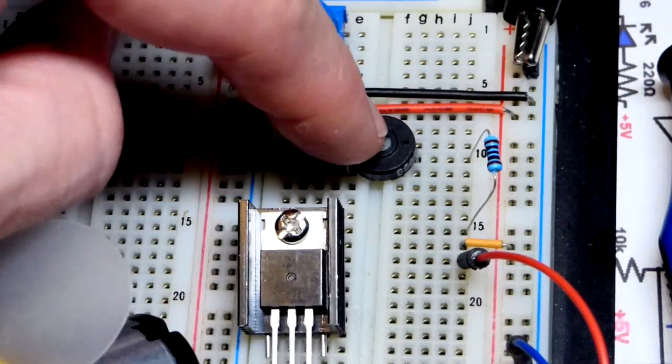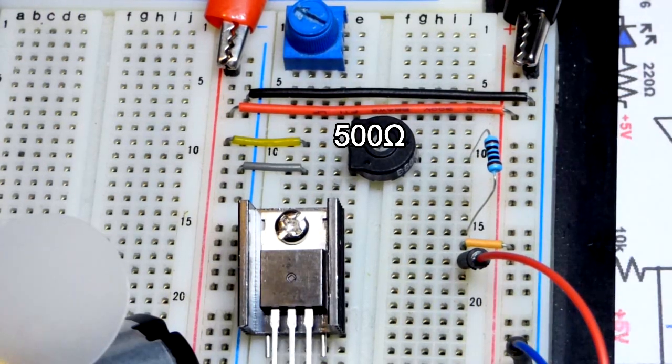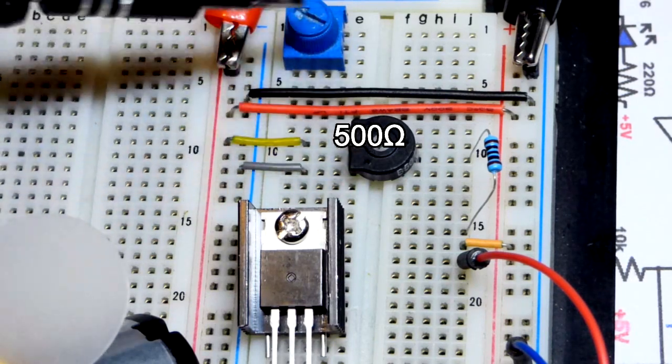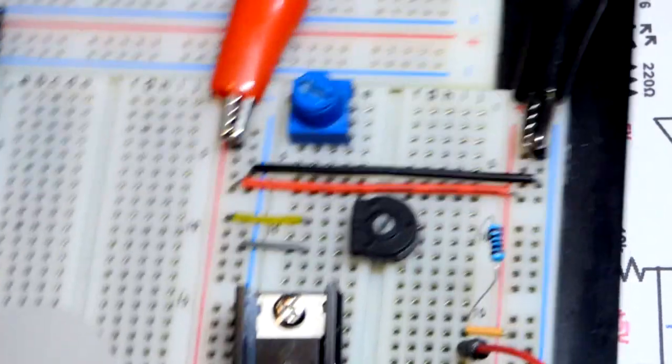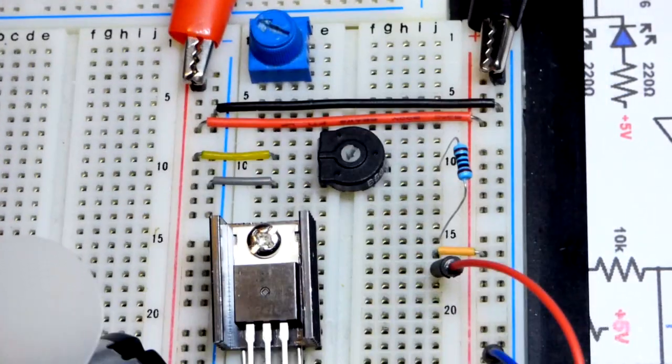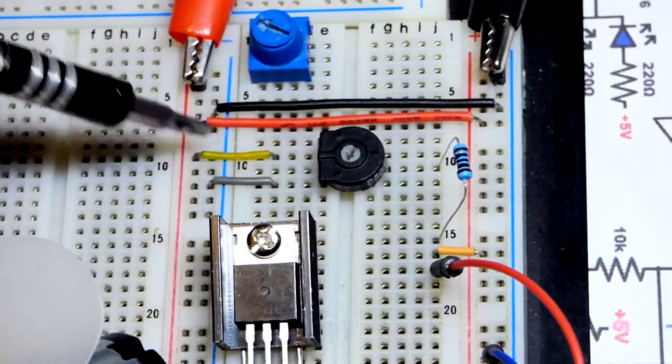This is a 500 ohm trim pot, so a very low value trim pot because we need to get a lot more current than we would get with the 10,000 ohm trim pot.